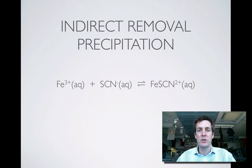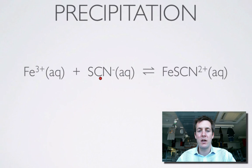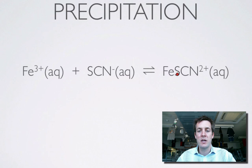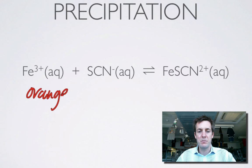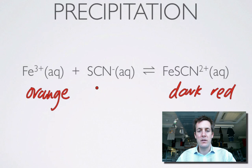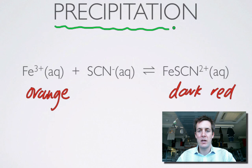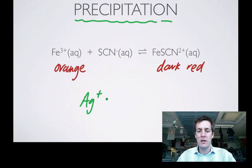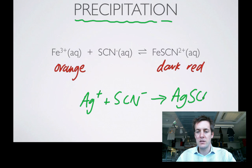Moving on to an experiment about a different way of adding and removing things. This is the iron(III) thiocyanate equilibrium, producing the iron(III) thiocyanate ion. The reactant side is orange but fairly pale, while the product side is a really dark red, almost like blood. We're not directly adding or removing a product or reactant here — instead we're thinking about precipitating something. If we add silver ions, they will form an insoluble precipitate with SCN⁻, the thiocyanate ion.